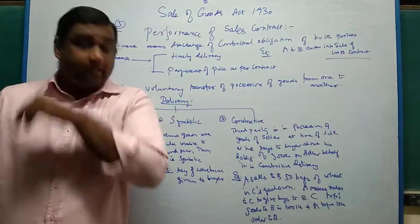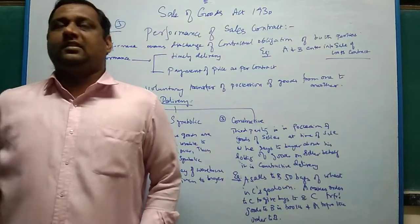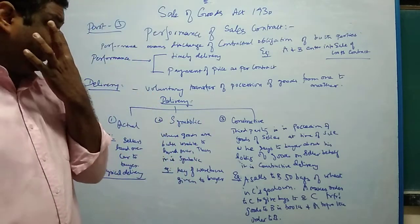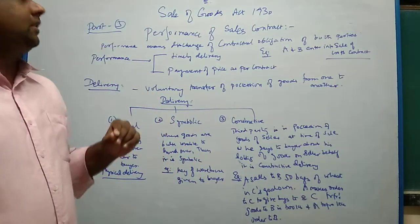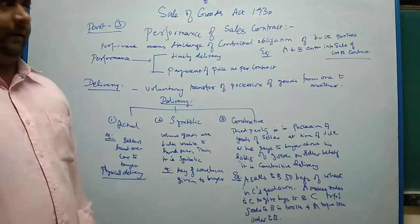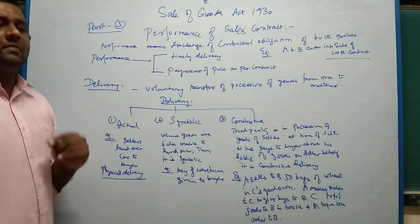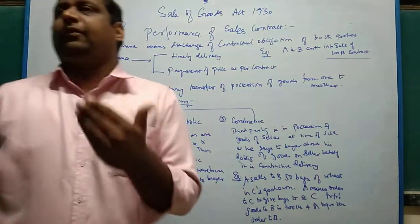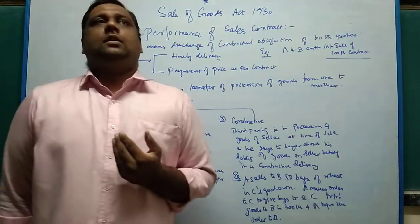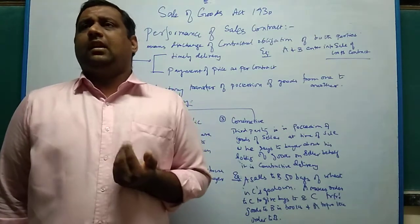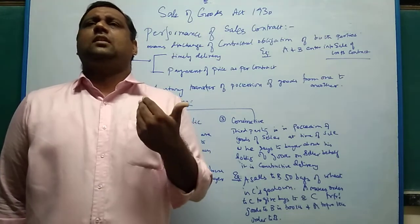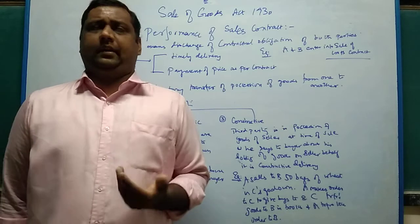Good morning students. Today we are going to discuss the next important topic: the Sale of Goods Act 1930, Part 3, which is performance of sales contract. Performance means the discharge or ability to carry out the performance requirements as per the contract.